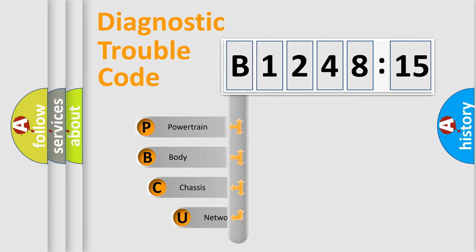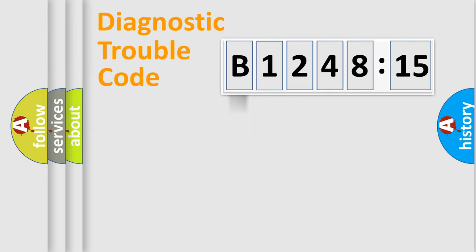First, let's look at the history of diagnostic fault code composition according to the OBD2 protocol, which is unified for all automakers since 2000. We divide the electric system of automobile into four basic units: powertrain, body, chassis, and network.